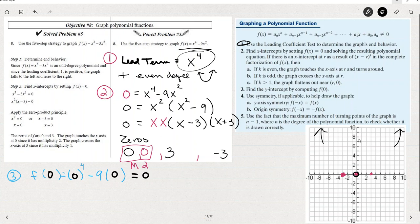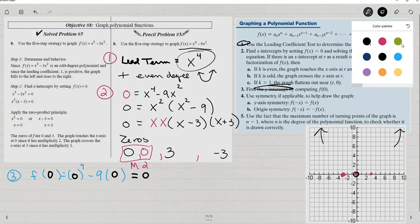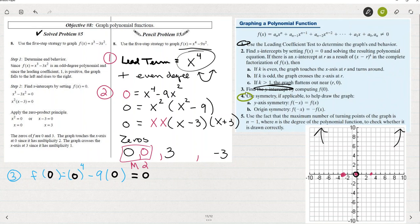So we know that it doesn't cross this x or the y-axis any other place. So that was the y-intercept. And now let's look at symmetry. Do you remember symmetry? How to determine symmetry?